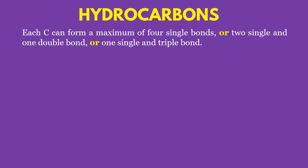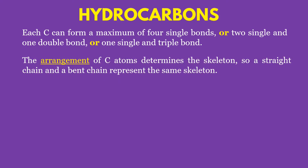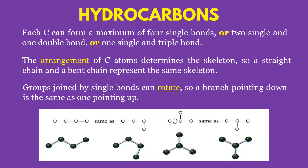What is a hydrocarbon? Each carbon can form a maximum of 4 single bonds, or 2 single and 1 double bond, or 1 single and 1 triple bond. The arrangement of carbon atoms determines the skeleton, so a straight chain and a bent chain represent the same skeleton. Groups joined by single bonds can rotate, so a branch pointing down is the same as one pointing up. Looking at the illustration, it shows that different positions of carbon will still have the same orientation or carbon number.